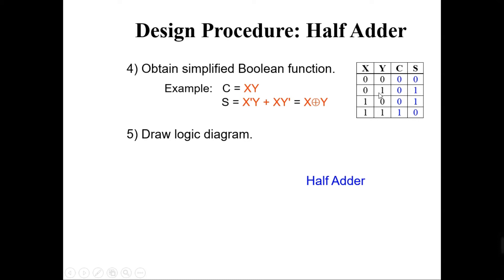For the next row, we are adding zero with one, so the sum will be one and the carry is zero. For the third row, adding one with zero, sum is one again and carry is zero. And in the last row, we are adding one with one — if you add 1 with 1, you get a sum of 0 but a carry of 1.